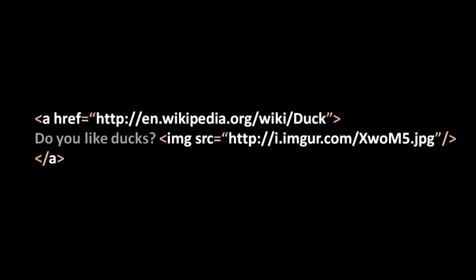For those tags which may include content, most of them allow you to include not just text but also other tags. So here, for example, is an anchor tag — basically a hyperlink — and the content here is no longer just the text "do you like ducks"; we've also thrown in an image tag. So this hyperlink will consist of not just text but also an image, and you'll be able to click on that image and it'll take you to the same page.